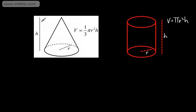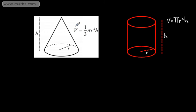If we have a cone with the same dimensions as a cylinder, it simply has one-third of the volume of the cylinder. So if I wanted to fill this cylinder up with water from the cone, we would have to fill three full cones to get one full cylinder. Or if you had a full cylinder, you could fill three entire cones with the same dimensions. If you're struggling to remember this formula, simply think about the volume of a cylinder and divide your answer by three.